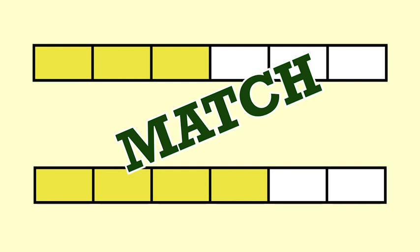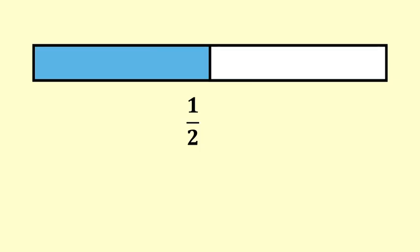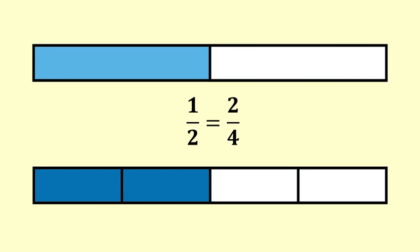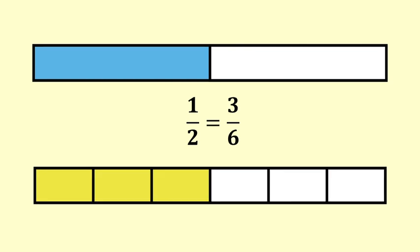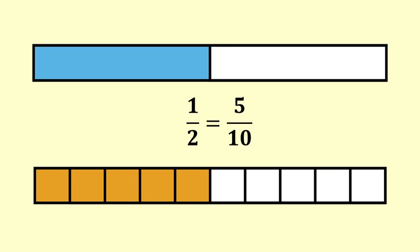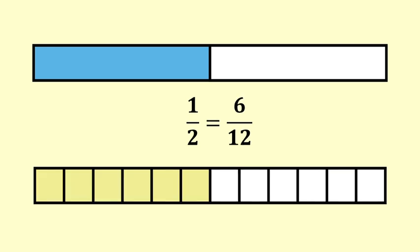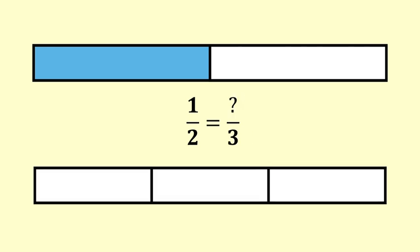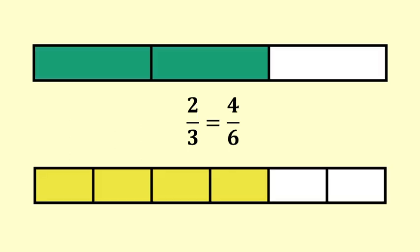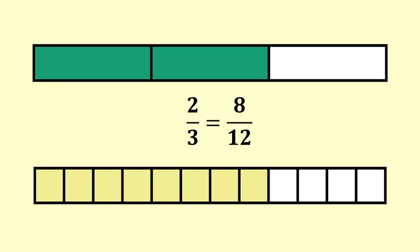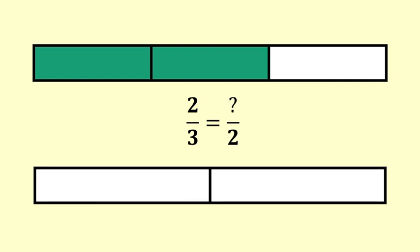Some fractions are more compatible. 1 half can be expressed as 2 quarters, 3 sixths, 4 eighths, 5 tenths, or 6 twelfths. But it is difficult to express 1 half in terms of thirds. Similarly, 2 thirds can be expressed as 4 sixths, 6 ninths, or 8 twelfths. But we have trouble expressing 2 thirds in terms of halves. We need to find a denominator that is compatible to both halves and thirds.